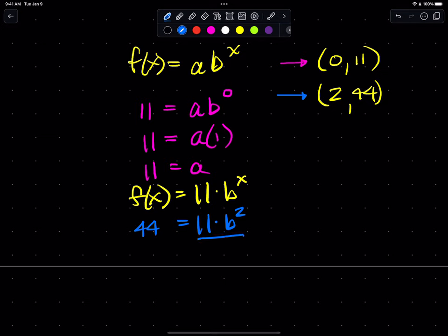And here I can proceed to solve for b by dividing both sides by 11. My left side becomes 4. b squared. If I take the square root of both sides, I get b is equal to plus or minus 2.